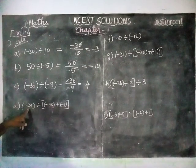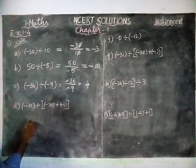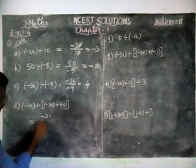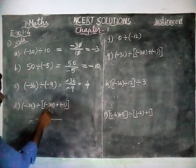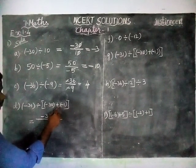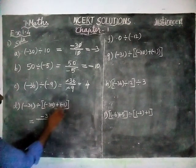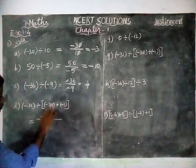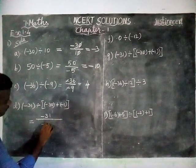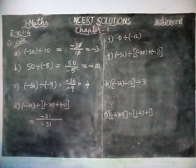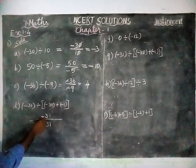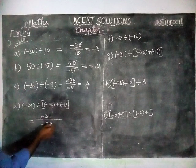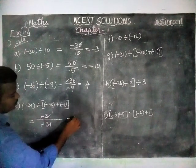Next, option D: minus 31 divided by minus 30 plus minus 1. When we are adding two same signs, we have to add them. Minus 30 plus minus 1 is equal to minus 31. Here, both signs are the same — minus minus — so they cancel. 31 divided by 31 is equal to 1.